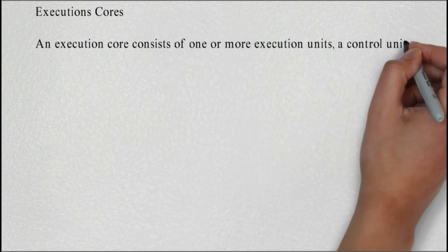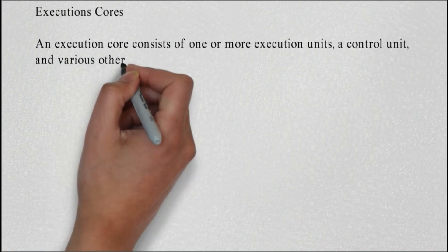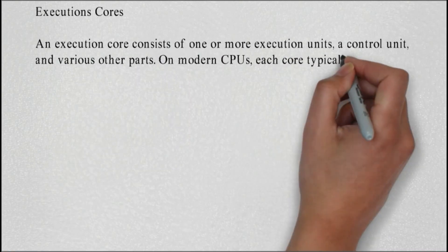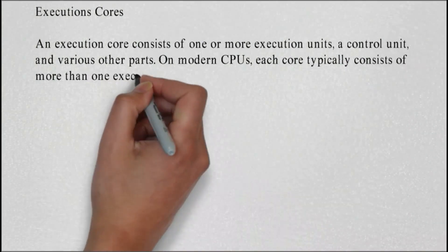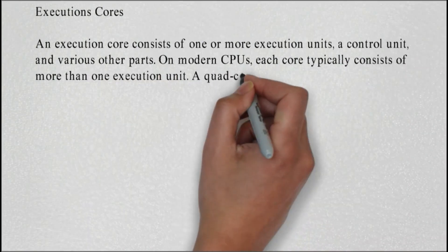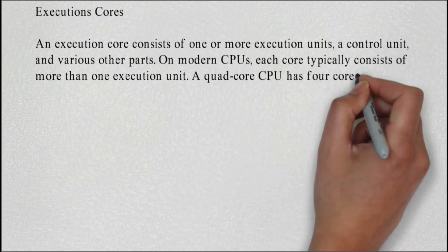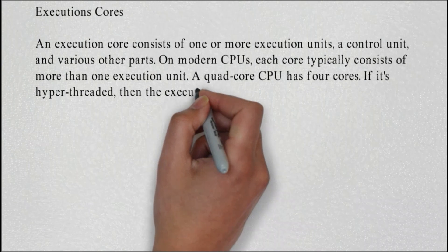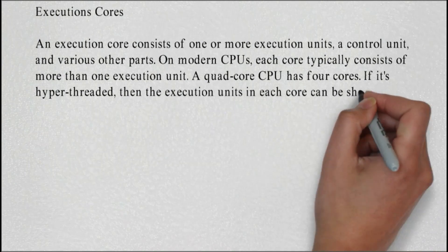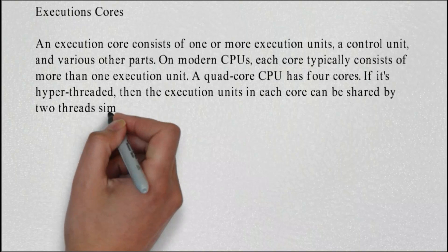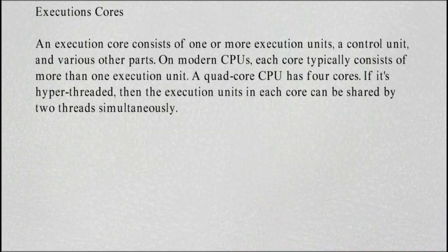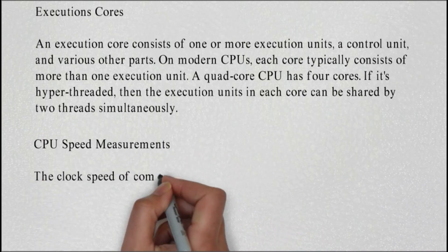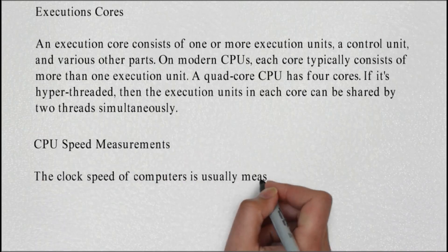Execution cores: an execution core consists of one or more execution units, a control unit, and various other parts. On modern CPUs, each core typically consists of more than one execution unit. A quad-core CPU has four cores. If it's hyper-threaded, then the execution units in each core can be shared by two threads simultaneously.